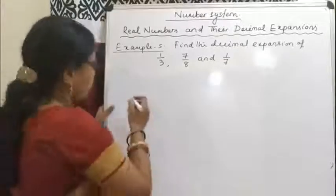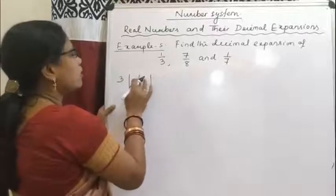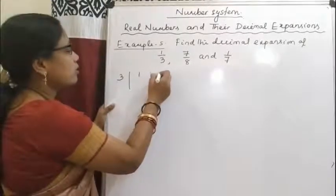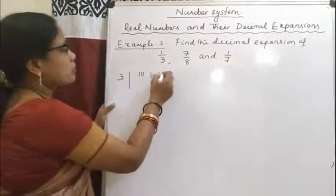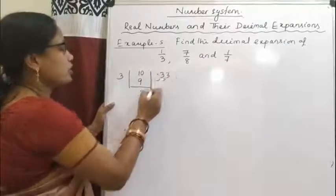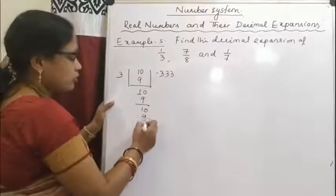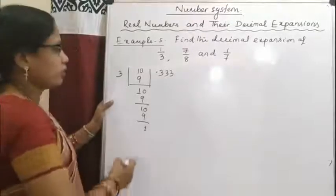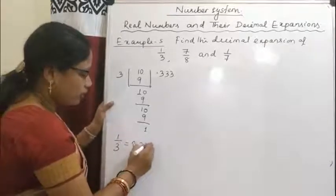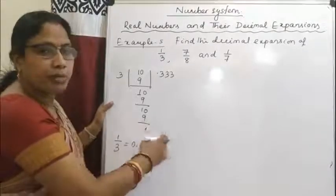So first, 1 by 3. Here 1 cannot be divided by 3, so we will put a decimal sign and place 0. So 3 threes are 9, remainder is 1. Again we place 0 — 3 threes are 9, remainder 1. Again 0 — 3 threes are 9, and like this it will continue. So the decimal expansion of 1/3 is 0.33333... up to infinity. The digit 3 is repeating continuously.